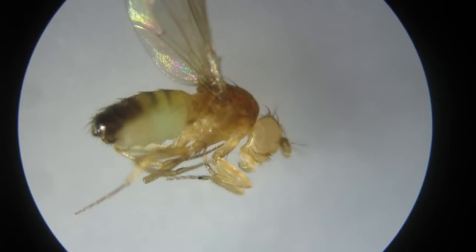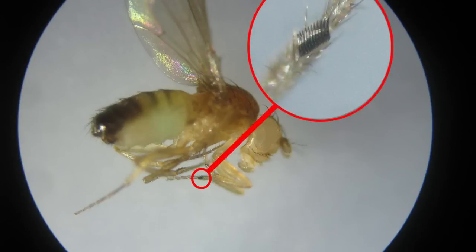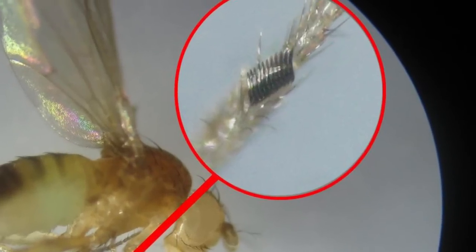Male flies also have a small black comb on their front legs. Under a hand lens, this appears as a black mark. But under a microscope, the comb is clearly visible. The female fly does not have this structure.